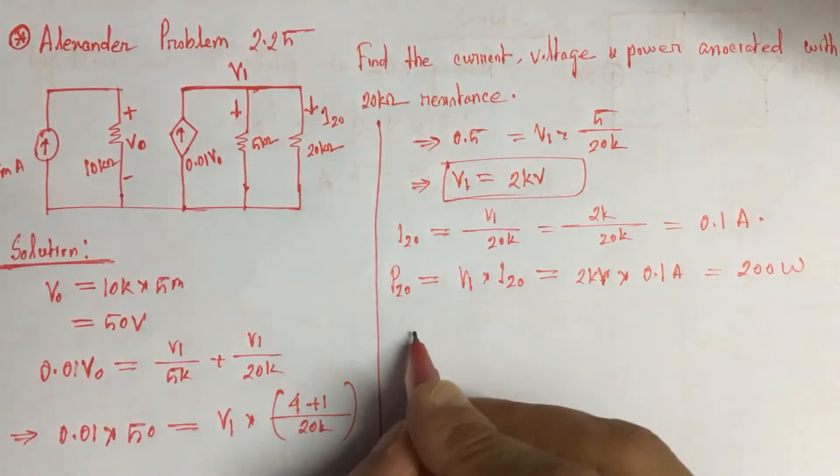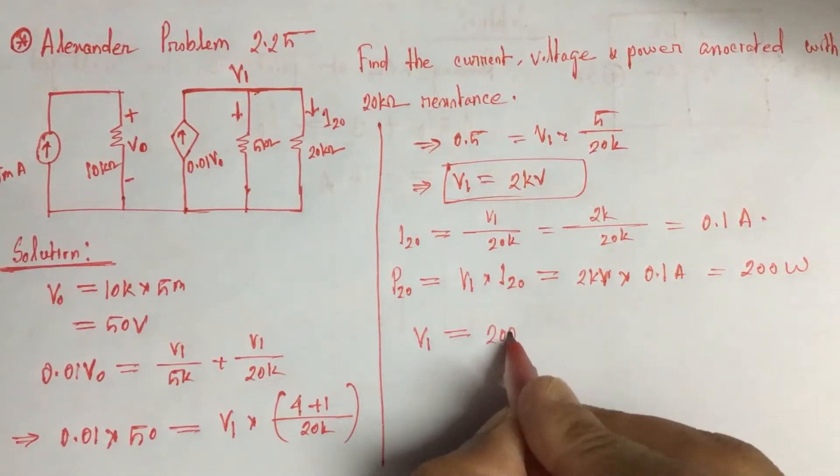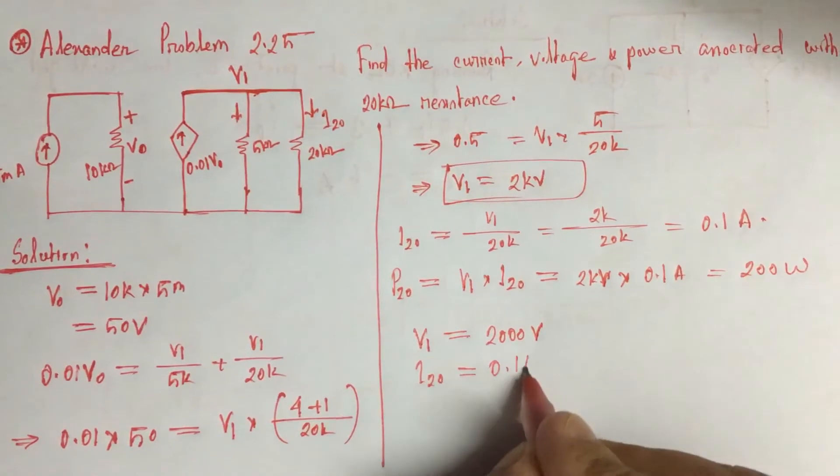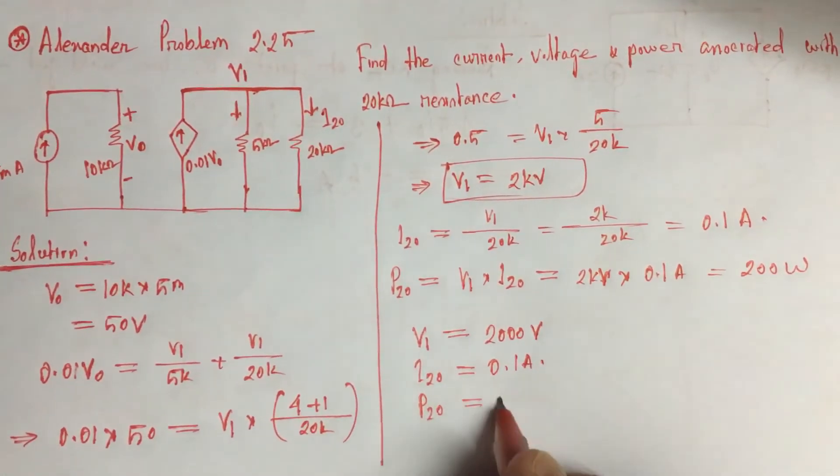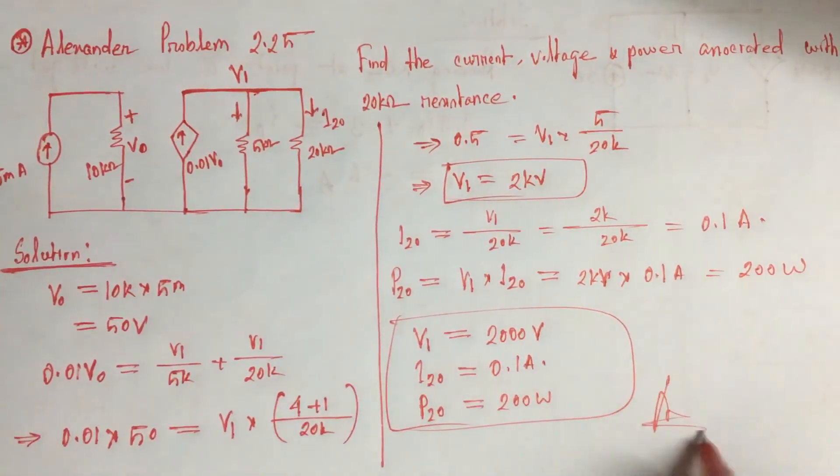So total: V1 is equal to 2000 volts, I20 is equal to 0.1 ampere, and P20 power is 200 watts. This is the answer. Thank you.